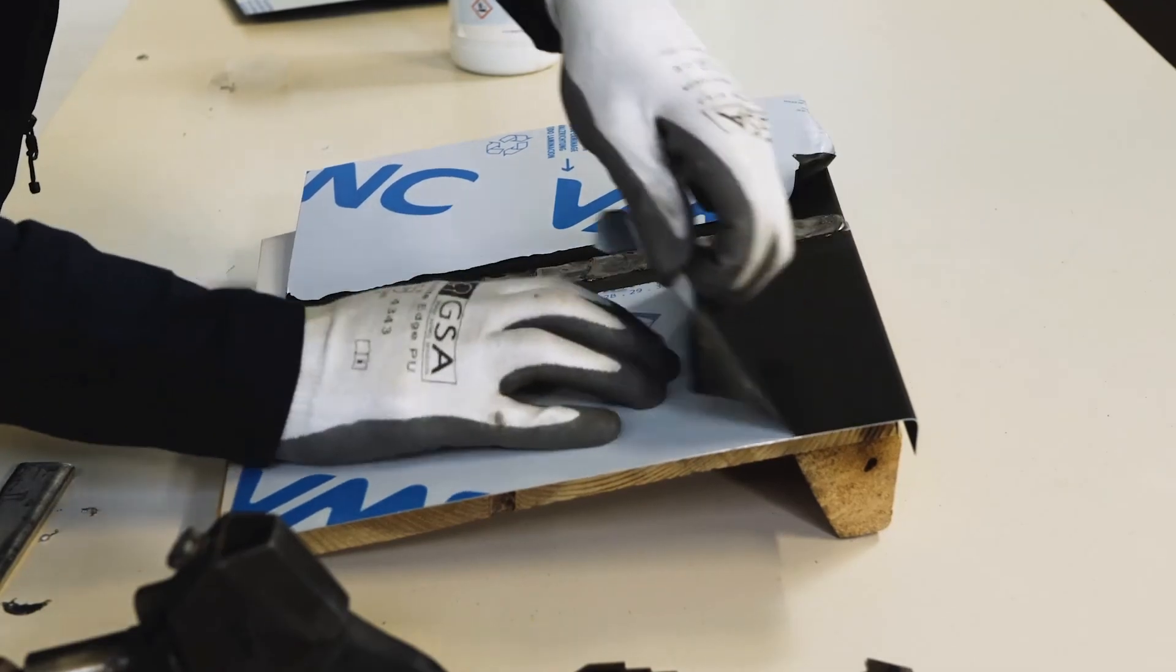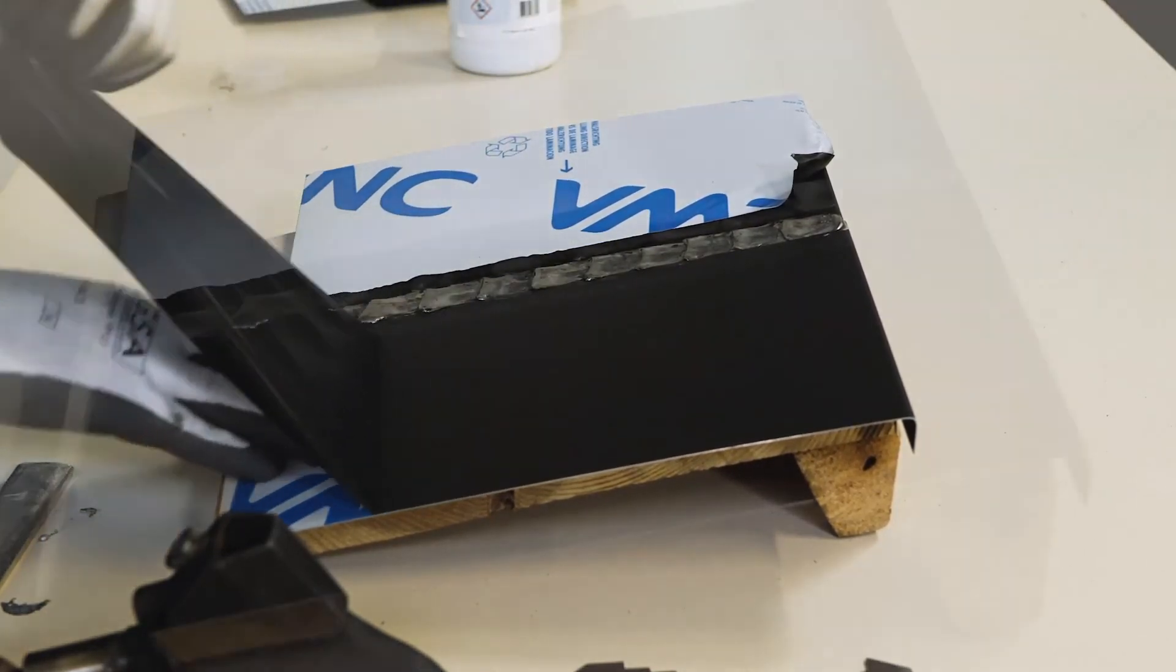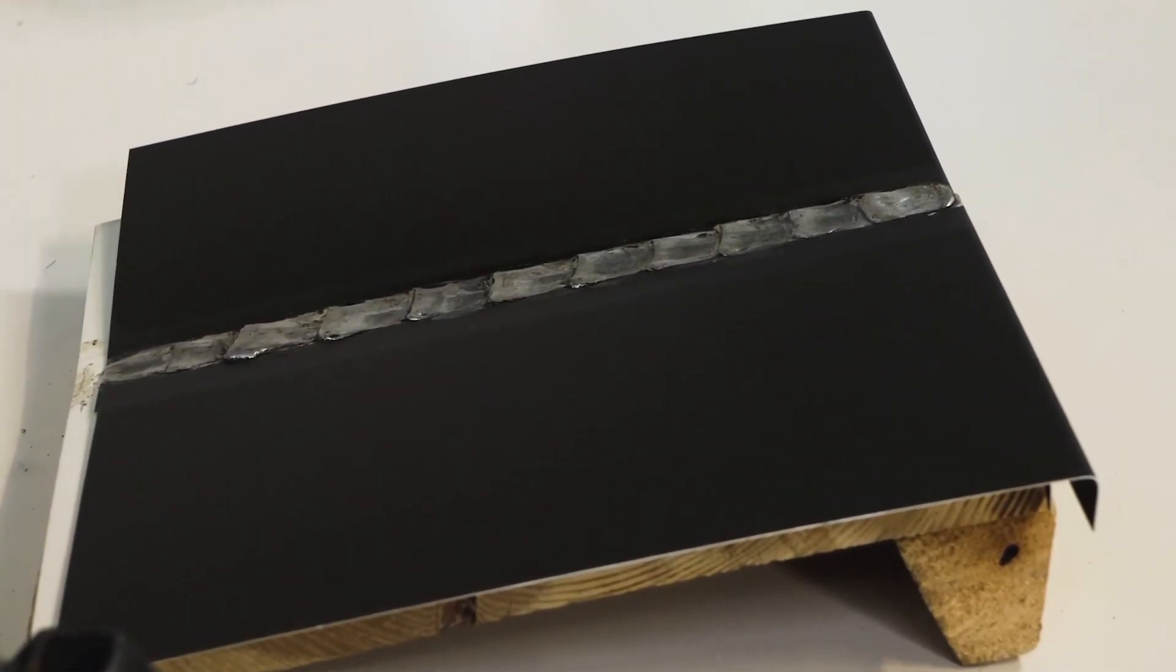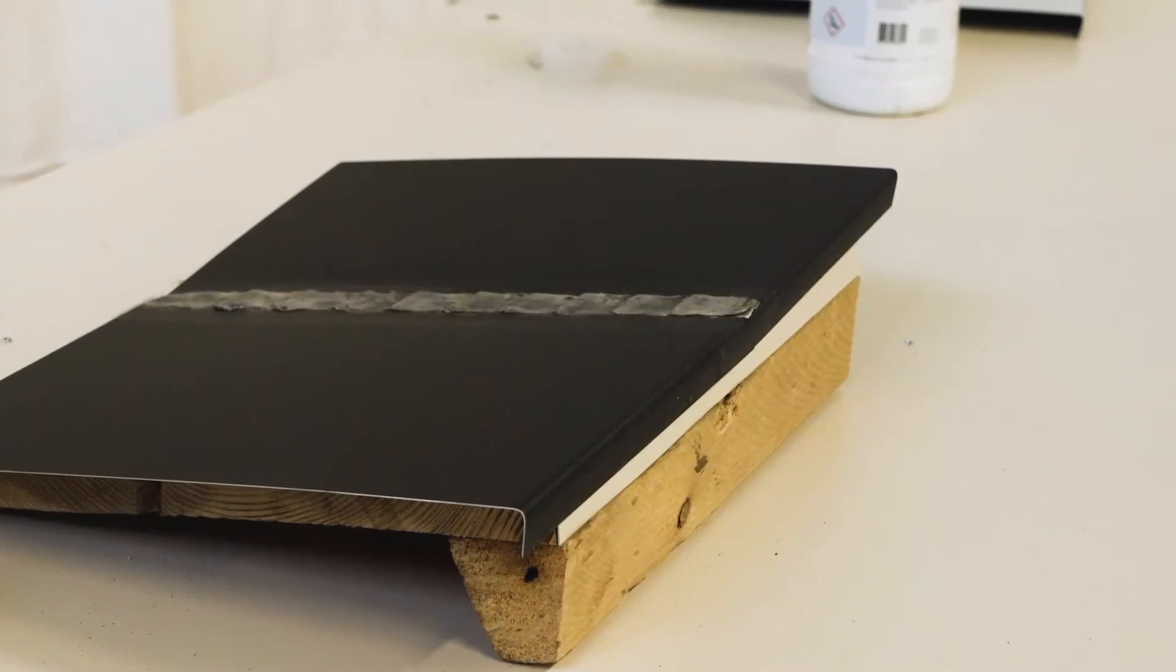The protective film can then be removed. It should be noted that a properly soldered joint should be considered as part of a zinc roof and not something to hide.